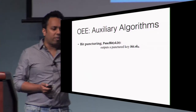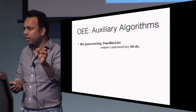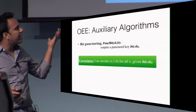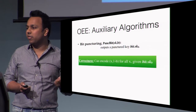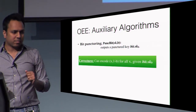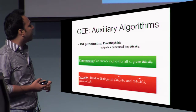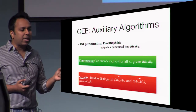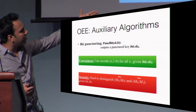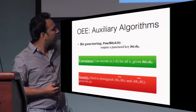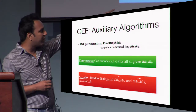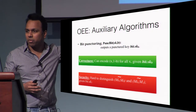The second auxiliary algorithm is puncturing on the bit instead of on the input. The key can be punctured on the bit, and correctness says that a key punctured at bit B can be used to encode any input with respect to bit 1 minus B. The security property says that if you are given the key punctured at bit 1, you cannot distinguish whether I give you an encoding of M0, M0 or M0, M1 — because the key punctured at bit 1 will not allow you to compute the output with respect to the second machine, so you cannot distinguish.